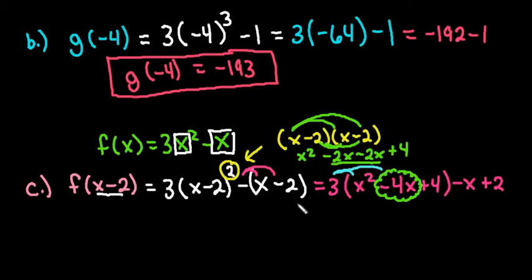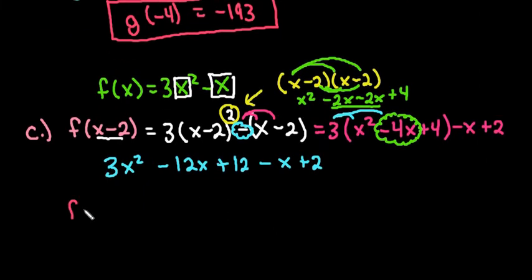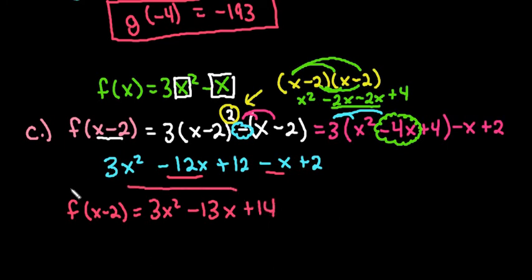Now if I just go through and distribute this in I would have 3x squared minus 12x plus 12 minus x plus 2. Make sure especially if you have a negative here that you did distribute it to everything inside because you're subtracting everything behind it. If we simplify our like terms we can say that f of (x minus 2) is equal to 3x squared. I don't have any other x squared terms. I do have 2 x terms. So I have negative 12x minus 1x which gives me negative 13x, and 12 plus 2 which gives me 14. This would be the final expression. You can't do anything else with this but it would give you a new equation of f of (x minus 2).